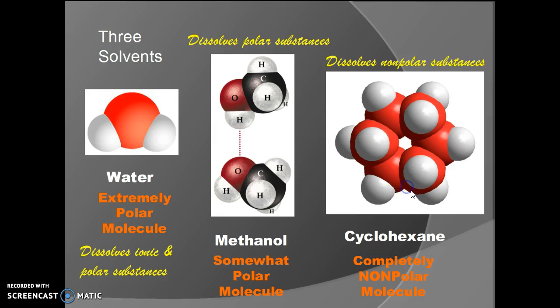So that gives you an idea why cyclohexane and other non-polar solvents will dissolve non-polar substances like gasoline, like naphthalene. Anything that doesn't have a positive and negative end will dissolve in a non-polar molecule.